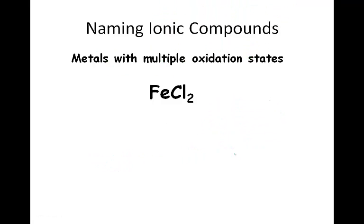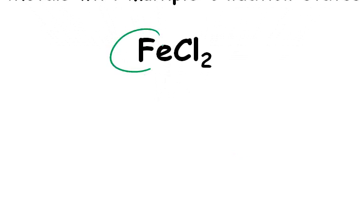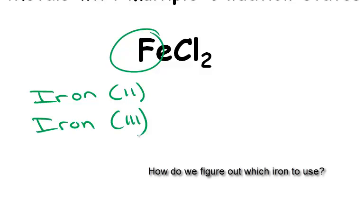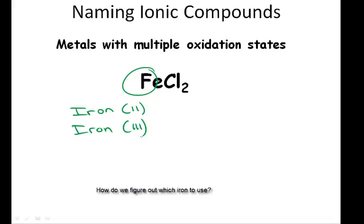Metals with multiple oxidation states, mostly transition metals, need special handling. For example, iron can be iron(II) or iron(III), so we need to distinguish between them. To do this, we need to do a little calculation.